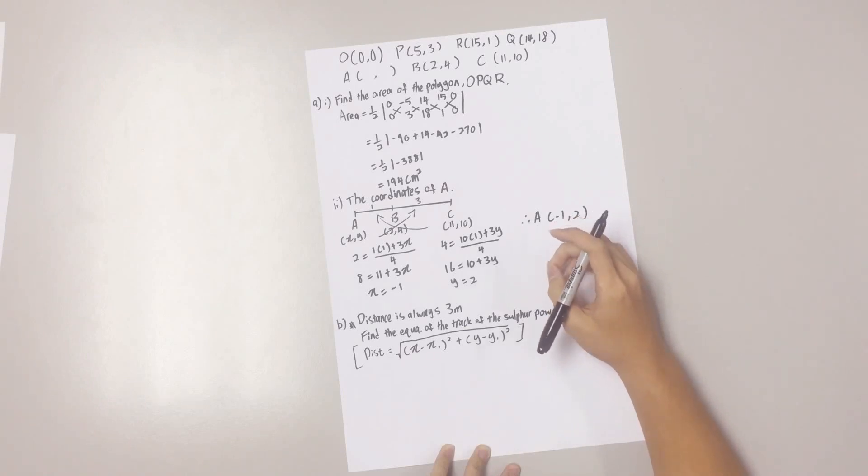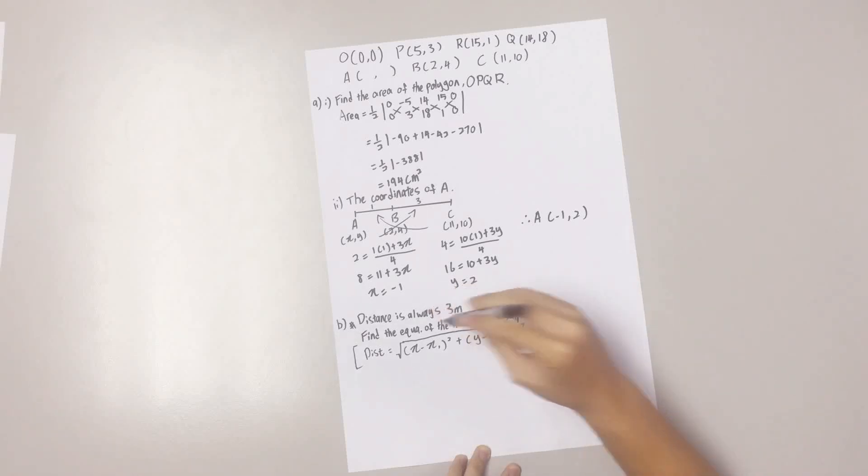Using the formula for finding distance, this is the formula, we can get the equation. The distance is 3 meters.